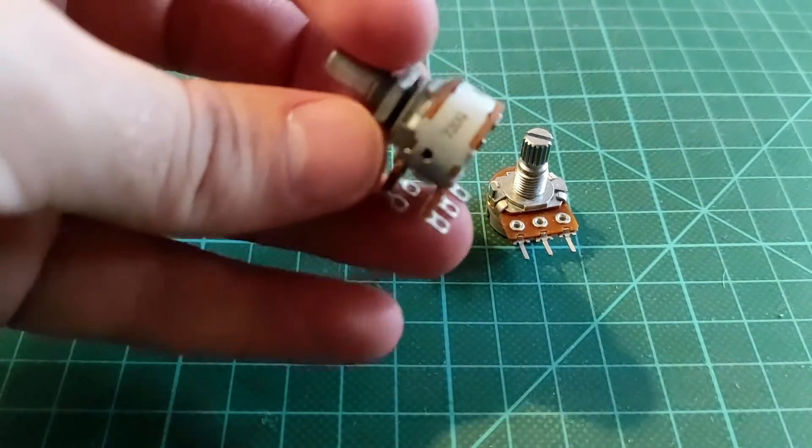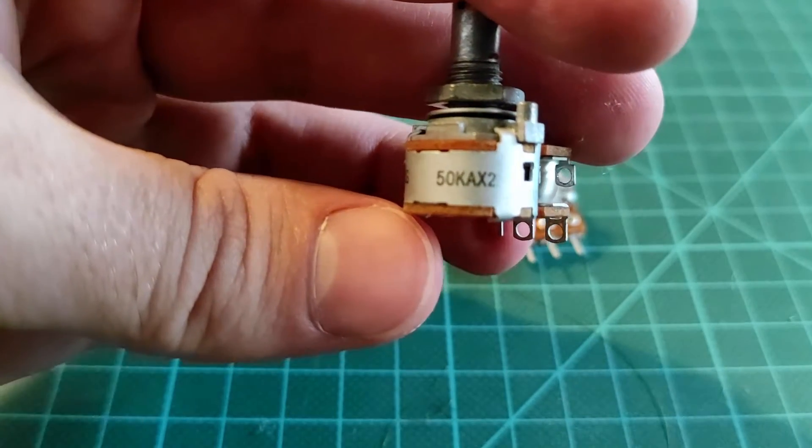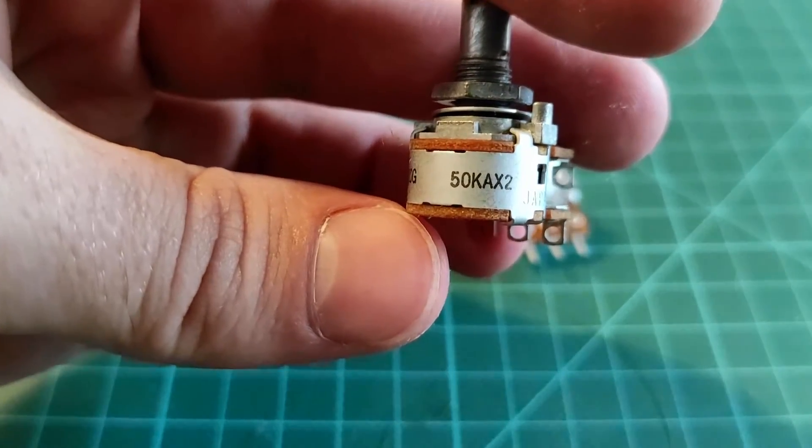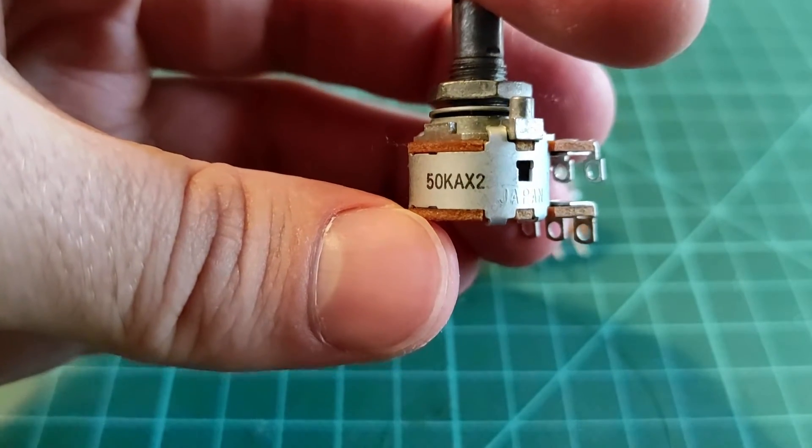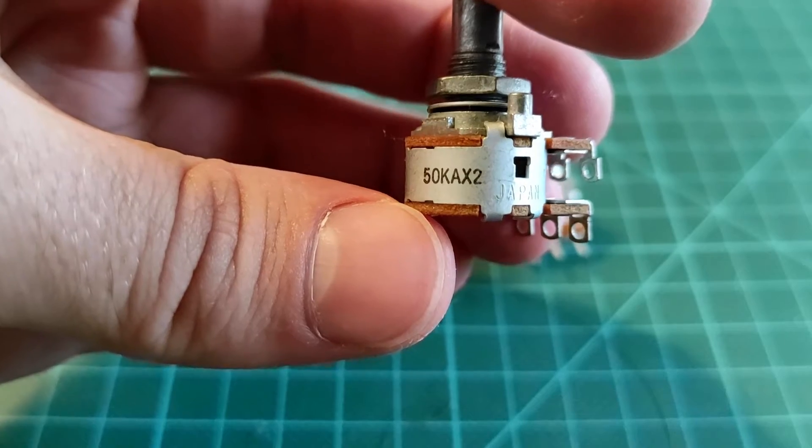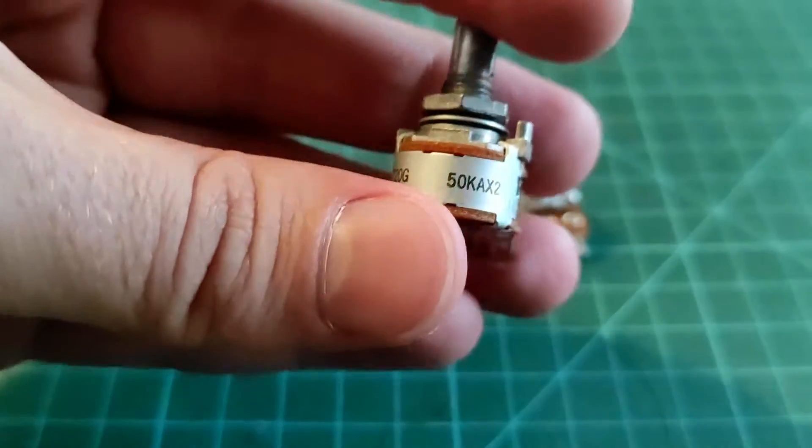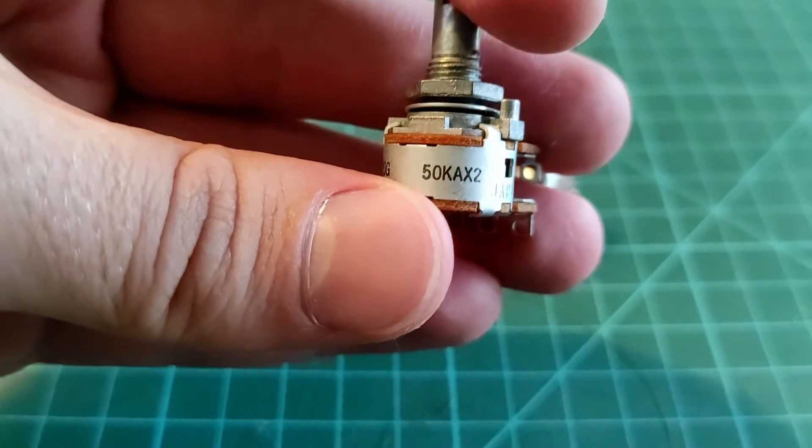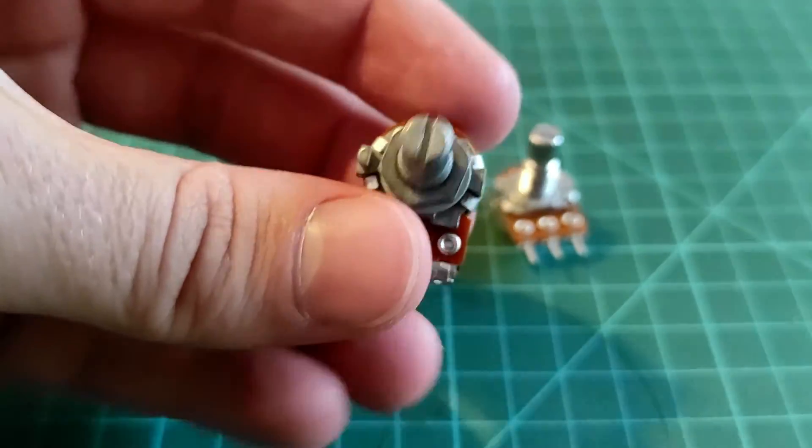The simplest way to test them or to know of course is to look at them. If they are called A, so this is 50,000 ohms and it's an A, X2. The X2 means it's a stereo potentiometer, but the A means it's a logarithmic one. So this is a logarithmic or a volume pot.